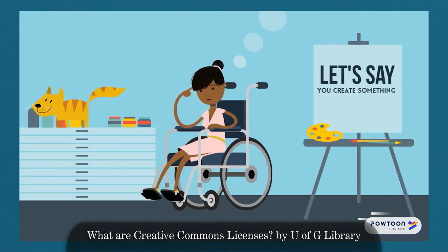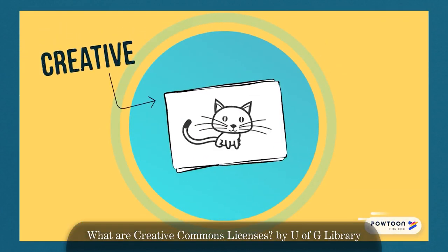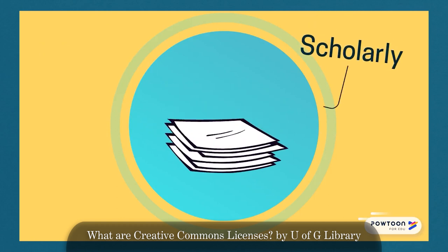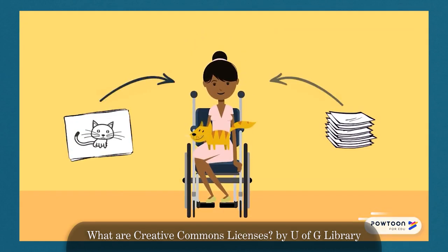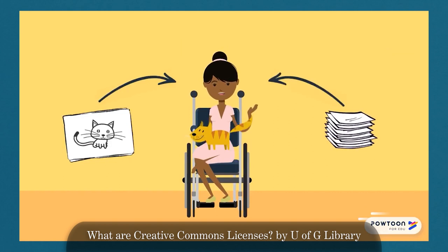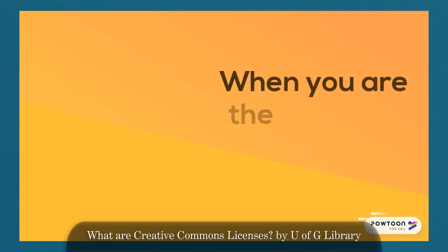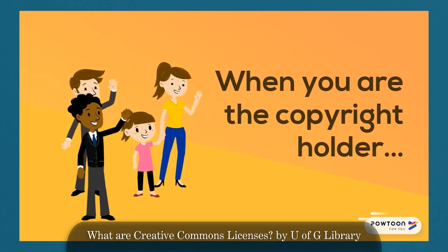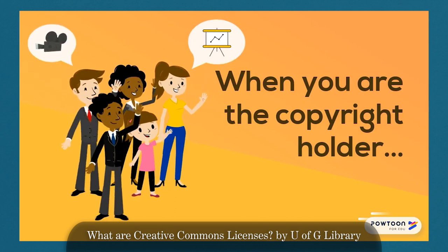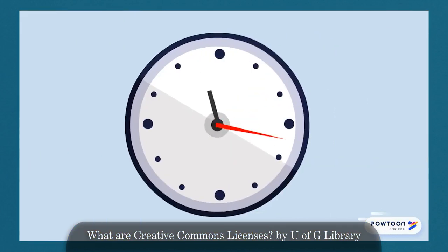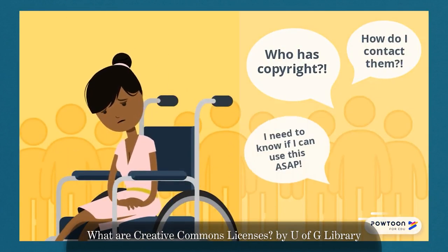Let's say you create something. This thing could be creative, like a picture of your cat, or scholarly, like an essay about cats. Because you are the creator, copyright allows you to decide what people can do with your creation. When you are the copyright holder, people have to ask you for permission before putting your cat picture into a PowerPoint or adapting your cat essay into a movie. Getting permission can be time-consuming and complicated for both the creator and the user.